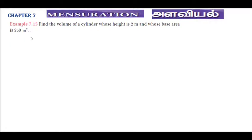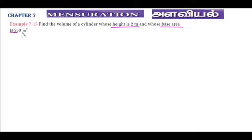Find the volume of the cylinder whose height is 2 meters and whose base area is 250 meter square. Height of the cylinder h equals 2 meter. The base area is 250 meter square. The cylinder base is circle shaped, so the circle area is pi r square.